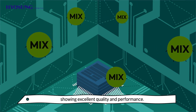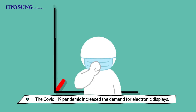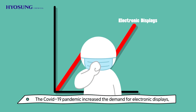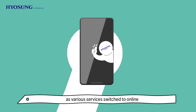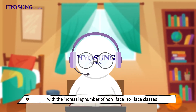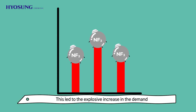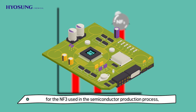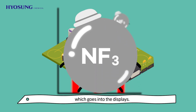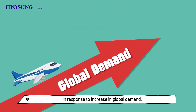The COVID-19 pandemic increased the demand for electronic displays as various services switched to online, with the increasing number of non-face-to-face classes and work from home. This led to the explosive increase in the demand for NF3 used in the semiconductor production process, which goes into the displays.